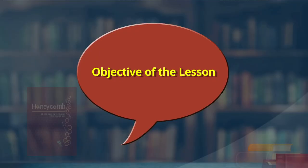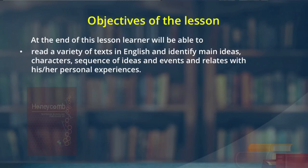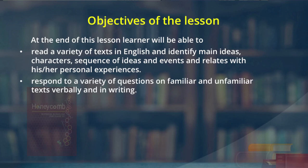Let us look at the objectives of this lesson. We need to repeat some of the objectives from part one so our learners know what is expected of them — the expected learning outcomes. At the end of this lesson, learners, you are expected to be able to read a variety of texts in English like this story and identify the main ideas, characters, sequences of events, and ideas of the story, and relate with your personal experience. Respond to a variety of questions on familiar and unfamiliar texts verbally and in writing.